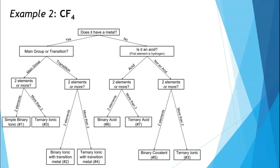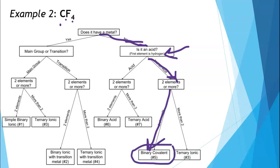Second example: carbon and fluorine. Does it have a metal? Carbon is in group 14 — not a metal. Fluorine is in group 17 — not a metal either. So no, this compound does not have a metal. Is it an acid? The way to tell is if the first element is hydrogen — the first element here is carbon, so it's not an acid. Are there two types of elements or more? Carbon and fluorine — two types. That brings us to binary covalent, naming rule number five.